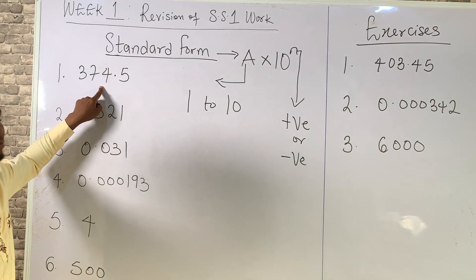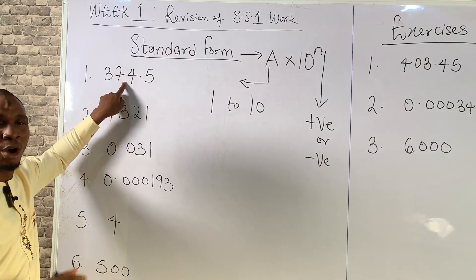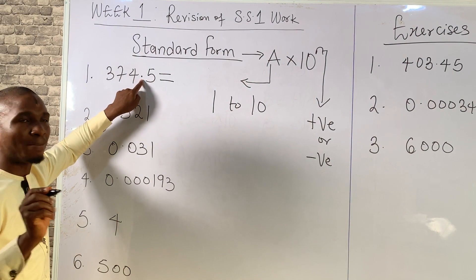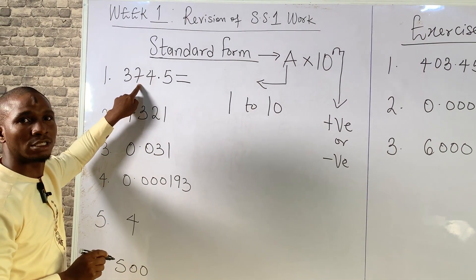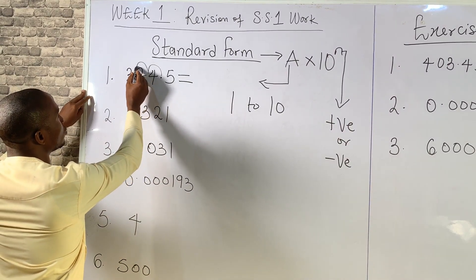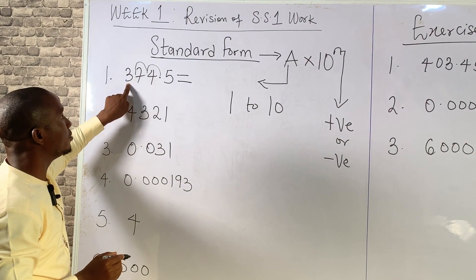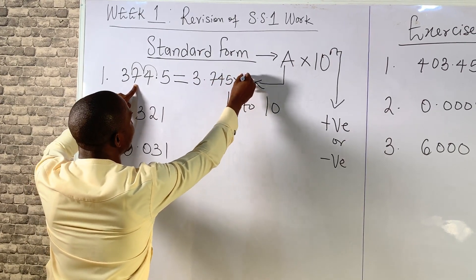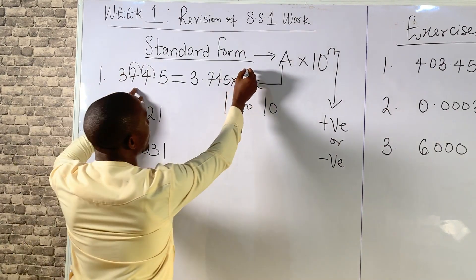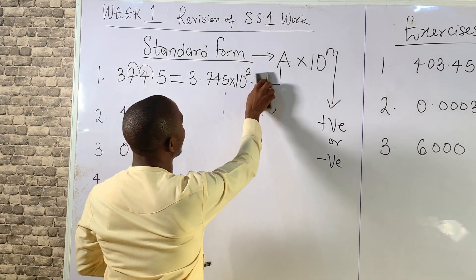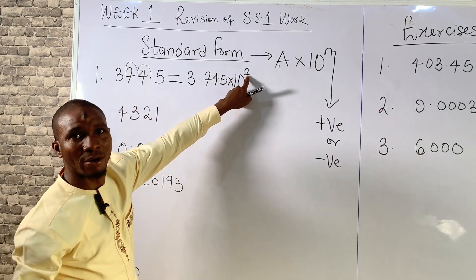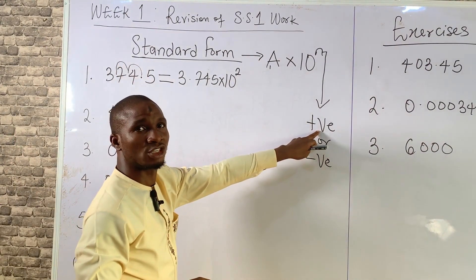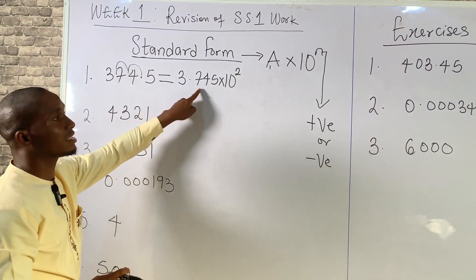Let's take the first example. We want to express 374.5 in standard form. The decimal point must be between the first number and the second number. So we move the decimal point 2 places. It's now between the first and second number, giving us 3.745 times 10 raised to power 2. N is positive because we moved the decimal point towards the left-hand side. This is the number expressed in standard form.